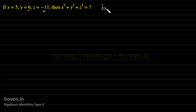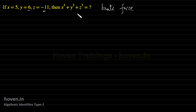One brute force method is to put the values: 5 cube, 6 cube, and minus 11 cube and obtain the answer. That will give you the answer, but it will waste your time. We have to definitely look at a shorter method, the one that the examiner intends us to do.